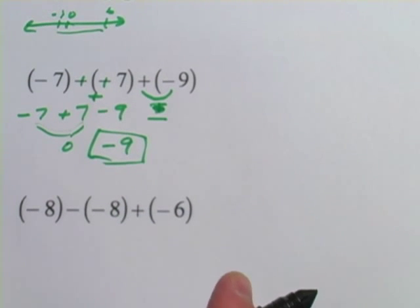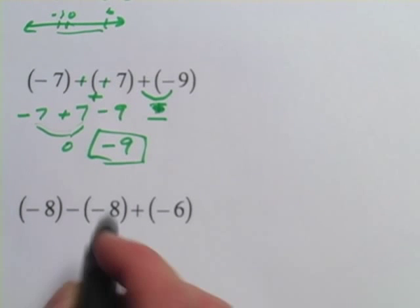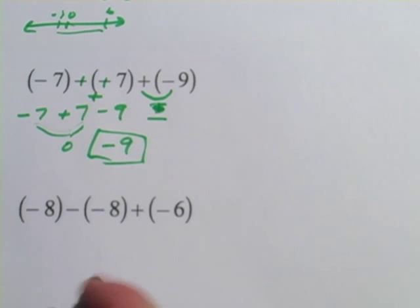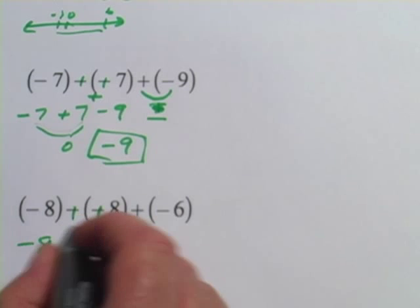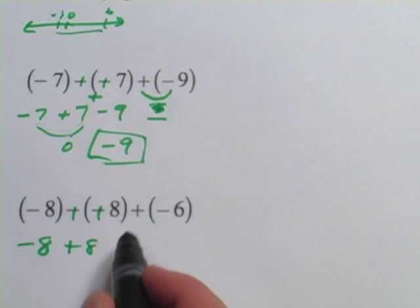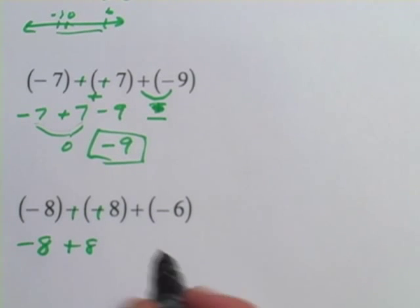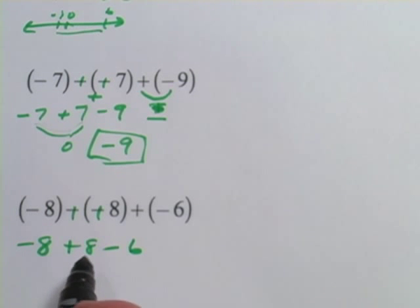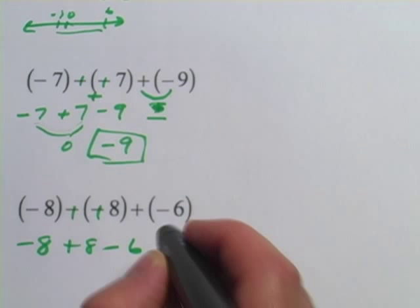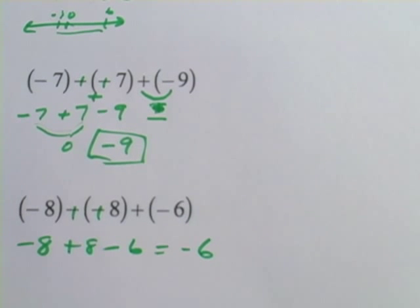All right, last one. I'm going to do this trick again where I see two minus signs in a row, I'm going to turn them into plus. So we start at negative 8 and then this becomes plus 8 and then plus a minus is the same thing as a minus. Negative 8 plus 8 is 0, minus 6, this equals minus 6.